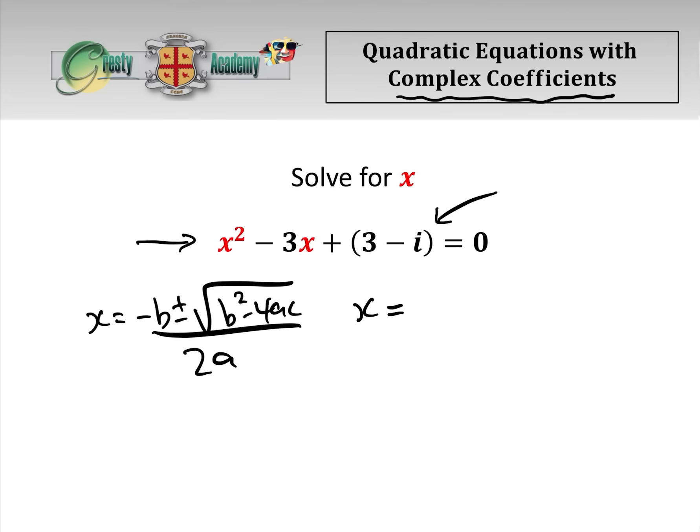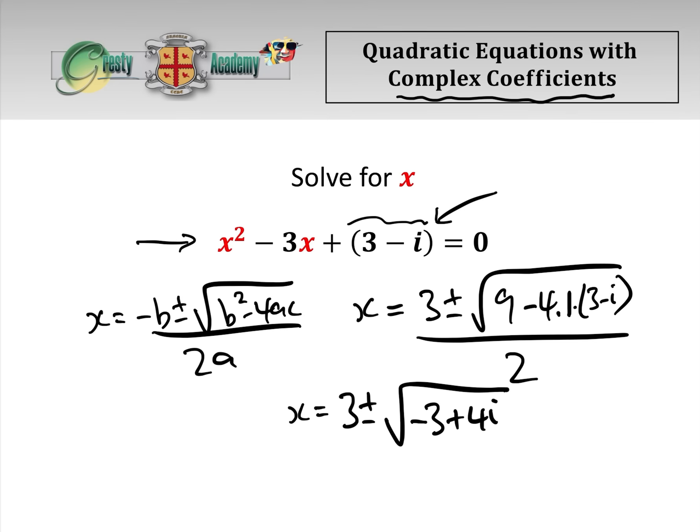That gives us x equals 3 plus or minus root of 9 minus 4 times 1 times 3 minus i, which is the c in this equation, all over 2. And herein we start to get the problems. x equals 3 plus or minus root of minus 3 plus 4i all over 2.